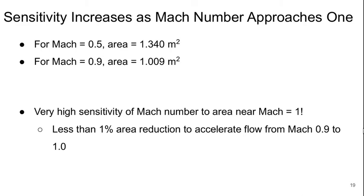If we do this, we'll find that at Mach 0.5, the area is about 34% larger. And at Mach number 0.9, the area is less than 1% larger.